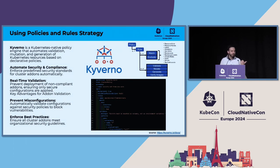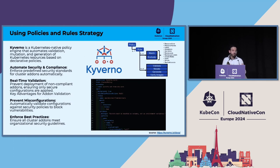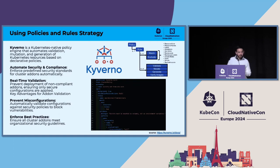Here's an example from the Kyverno docs. You define a policy that has one or more rules. Each rule matches some object — like a namespace, deployment, or label — and either matches or excludes it. If matched, you can perform validation, mutation, generation, or image verification. For example, this policy checks for pods that are mounting secrets using environment variables and says no — you need to mount them as volumes — so that pod cannot be created.